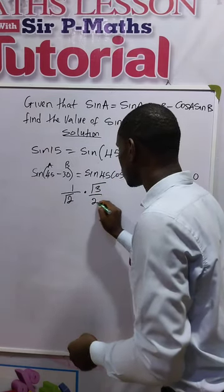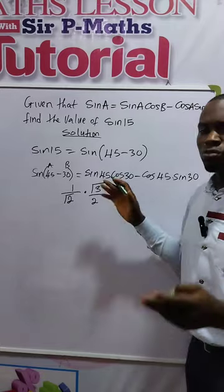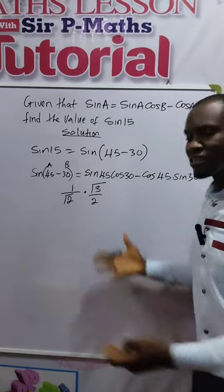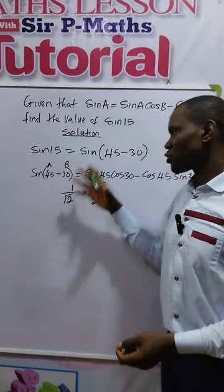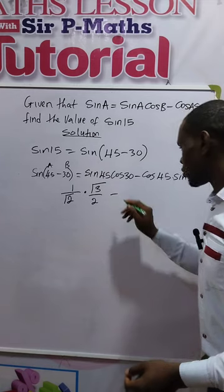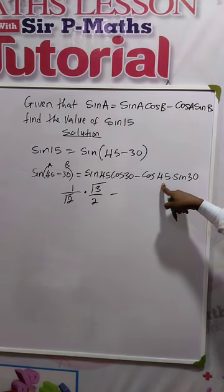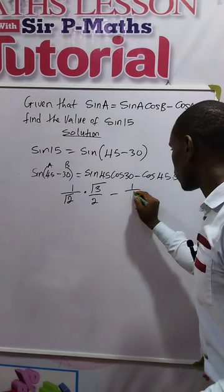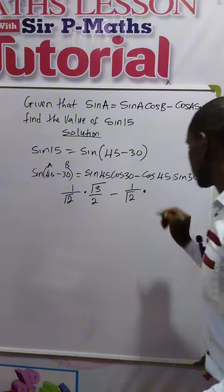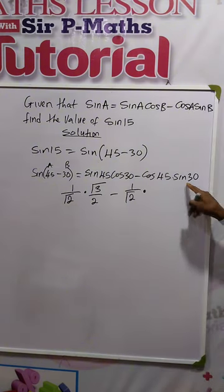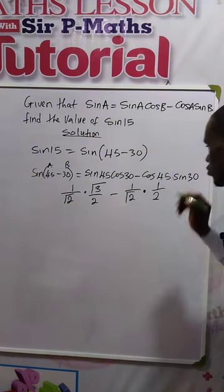So what it means is that you must know the trigonometric identities so that you'll be able to solve questions like this. Minus cos 45—trig identity of cos 45 is still 1 over root 2 times sin 30 is 1 over 2.